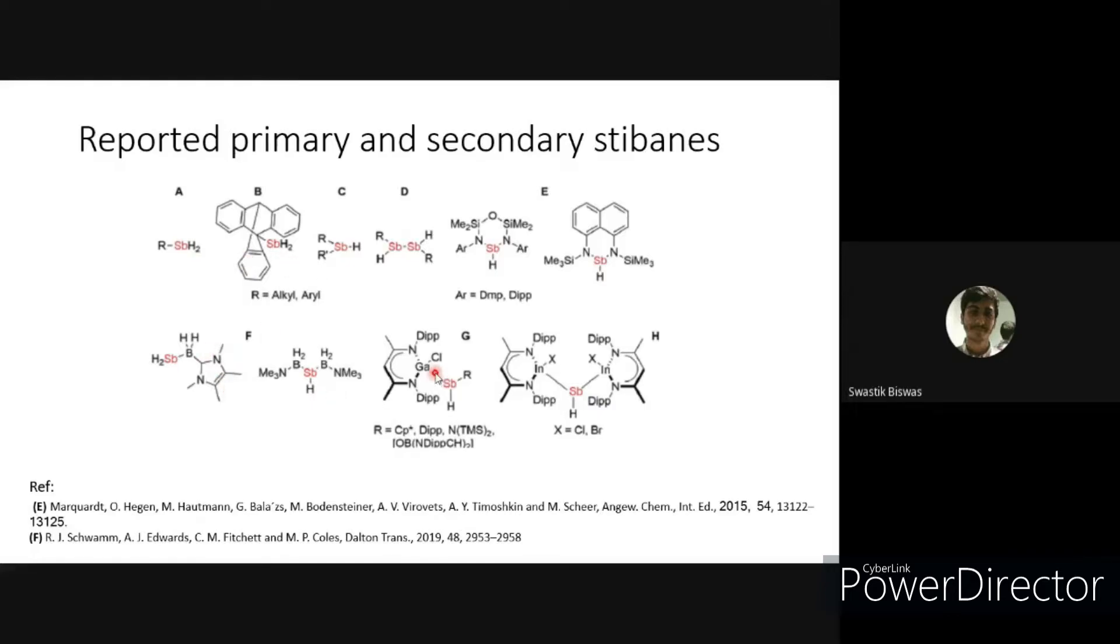In case of G and H, the group 13 beta-diketiminate nacnac with R equal to Cp star forms unstable secondary stibanes. While for isolable and stable stibanes, G and H were formed when R were Dipp N trimethylxylene and oxy boron compound.